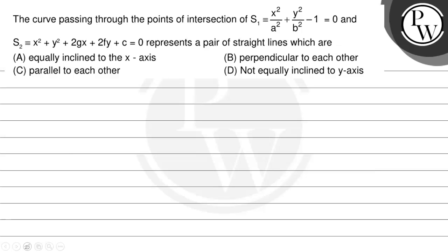Hello bachow, let us read the question. The curve passing through the point of intersection of S1 = x²/a² + y²/b² - 1 = 0 and S2 = x² + y² + 2gx + 2fy + c = 0 represents a pair of straight lines. Option A: equally inclined to the x-axis. Option B: perpendicular to each other. Option C: parallel to each other. Option D: not equally inclined.